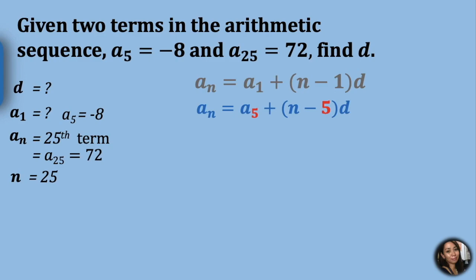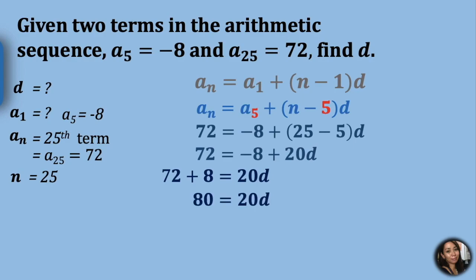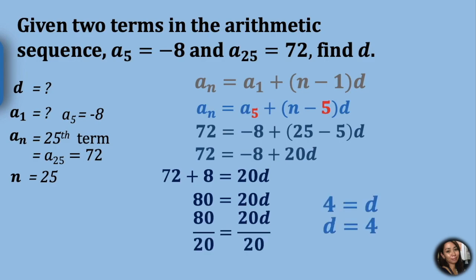Let us substitute the values. Solve first what is inside the parentheses, and we now have 72 equals negative 8 plus 20d. To remove negative 8, we add its additive inverse, positive 8, on both sides. So 72 plus 8 equals 20d, giving us 80 equals 20d. Divide both sides by 20, and we get d equal to 4.